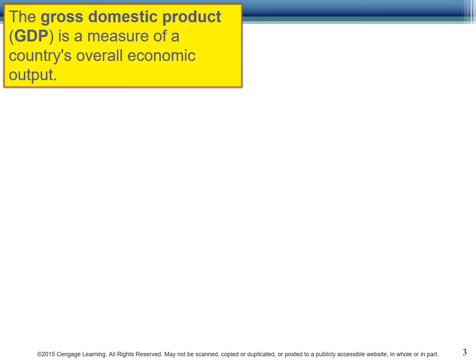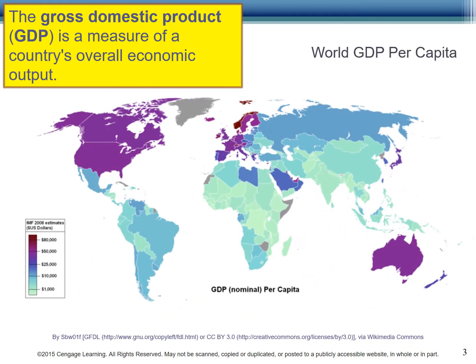Let's start by defining Gross Domestic Product, which is a measure of a country's overall economic output. Why talk about GDP in an information systems class? Well, GDP is one indicator of how far along countries are on the digital divide spectrum. The more money a country has,